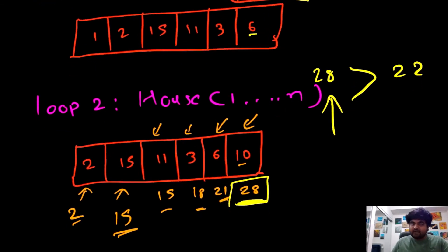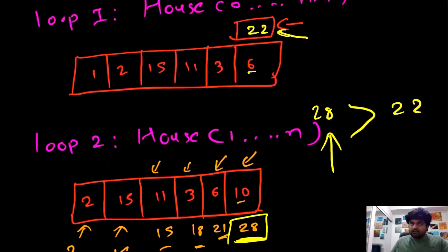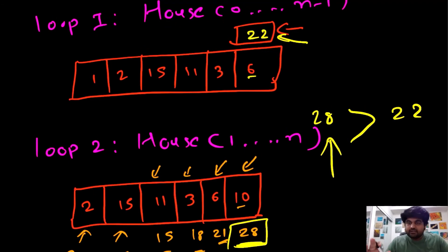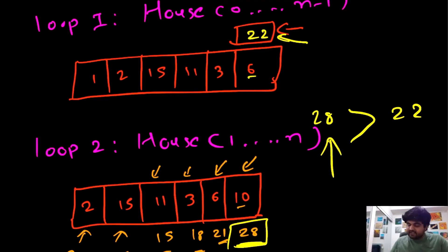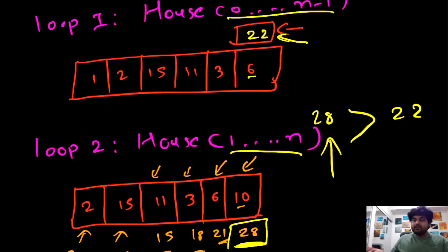We just need to see which value is actually greater and simply return that. In this case, 28 is greater than 22, so 28 would be our answer. This is a very good solution — we are building it on top of whatever we have solved for House Robber 1, just changing the scope of up until what points we are using the solution.